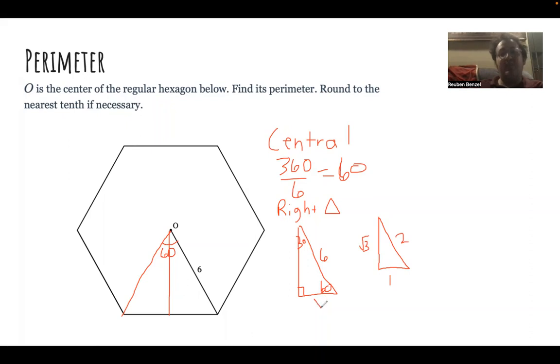And let's say that I want to find what X is. I could say that X over one is equal to six over two. Or that my hypotenuse is twice as big as my shortest side. So this means that X is equal to three. Making the other part of that triangle three as well. So now my total of that side is going to be six. I have six sides though.